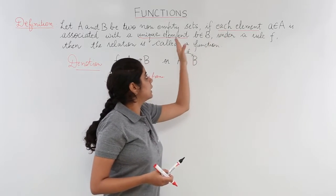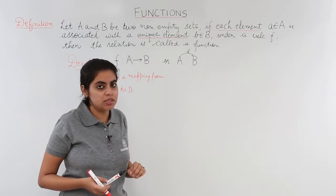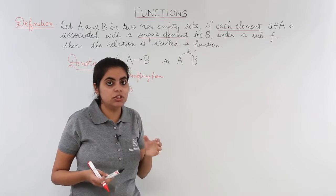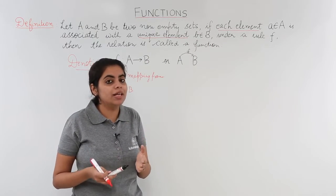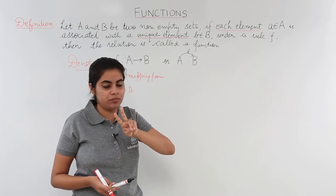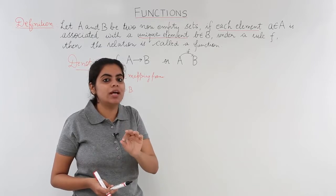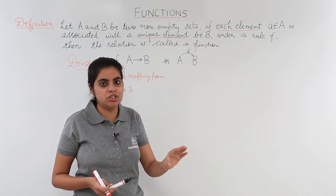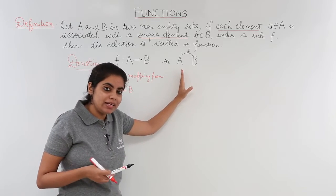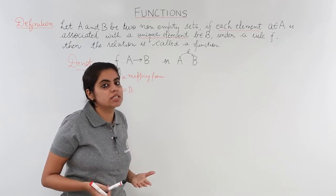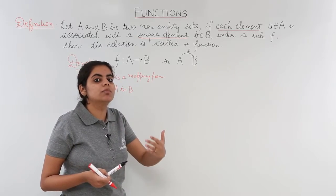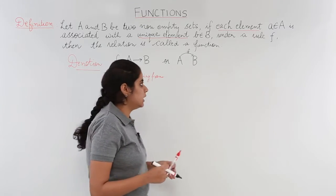Going through the definition once more: a relation can only become a function when two conditions are satisfied. First, I must not leave any element of the first set unassociated. Second, each element of the first set should be associated with a unique element of the second set.